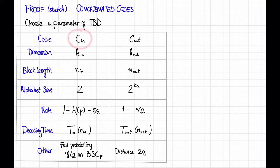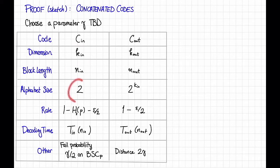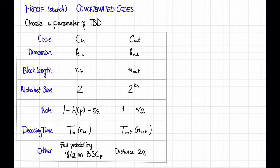As usual with concatenated codes, we're going to have an inner code C_in and an outer code C_out. The inner code will have dimension k_in and block length n_in, and it's going to be a binary code, so alphabet size 2. The outer code, similarly, will have dimension k_out, block length n_out, and alphabet size 2 to the k_in, which is what it needs to be so that the concatenation works out.